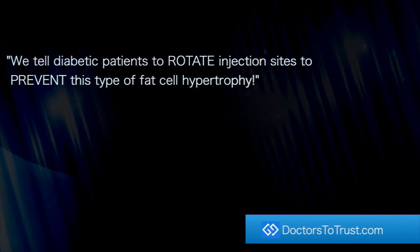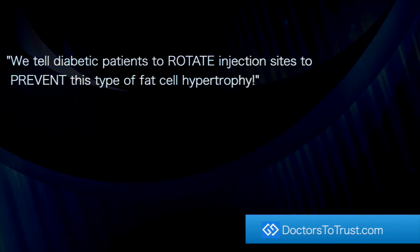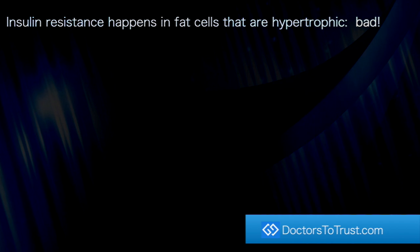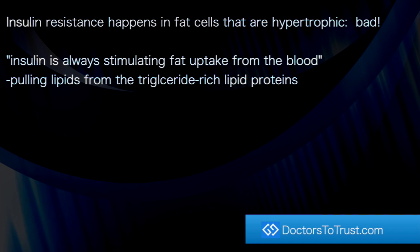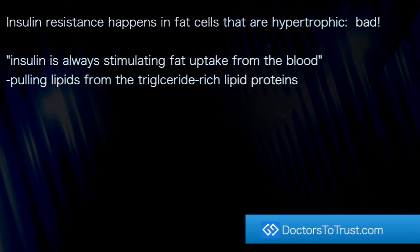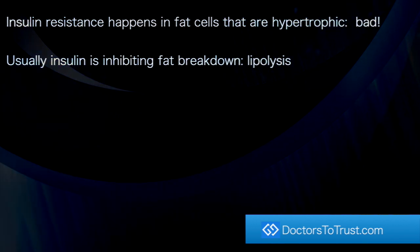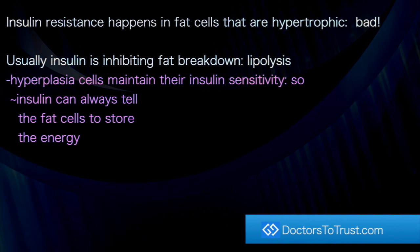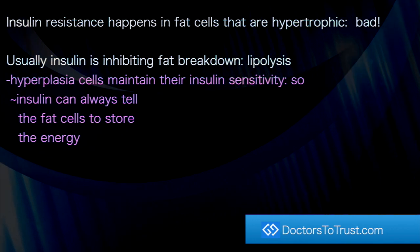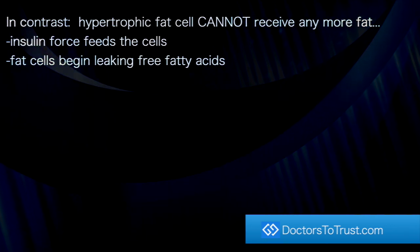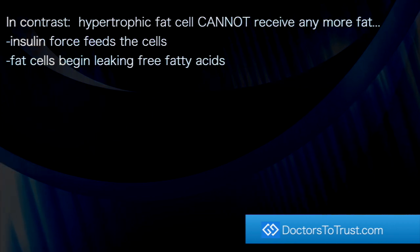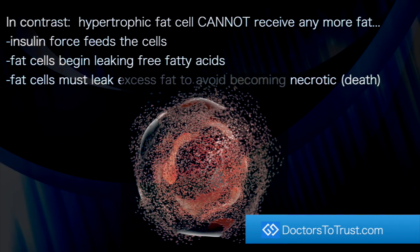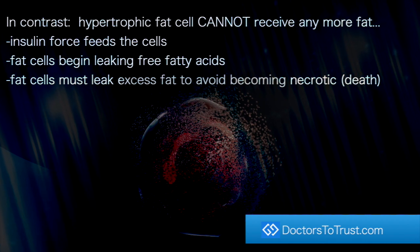Diabetic patients are told to rotate injection sites to prevent this type of fat cell hypertrophy. Insulin resistance happens in fat cells that are hypertrophic — that's bad. Insulin is always stimulating fat uptake from the blood, pulling lipids from triglyceride-rich lipoproteins, and usually inhibiting fat breakdown — lipolysis. Hyperplastic fat cells maintain their insulin sensitivity, so insulin can always direct fat cells to store energy. In contrast, hypertrophic fat cells cannot receive any more fat; insulin force-feeds the cells, and the fat cells begin leaking free fatty acids. Fat cells must leak excess fat to avoid becoming necrotic or dying.